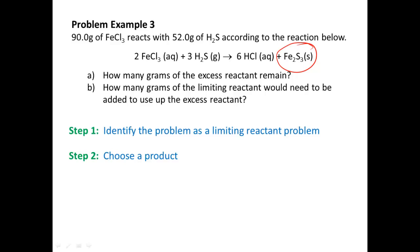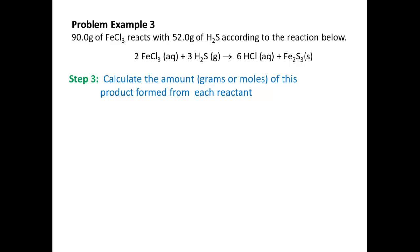I'm going to pick the non-aqueous product, Fe2S3, because it's solid. It doesn't matter which product you pick — I just tend to pick the solid product. We need to calculate the amount of this product formed from each reactant. In the last video we calculated this in grams, but in this video we are only going to go to moles because we're not asked for grams of that product. This simplifies our calculations. If you go all the way to grams, you just have an extra step, but it's not a big deal.